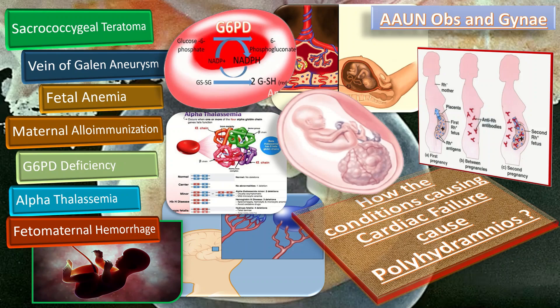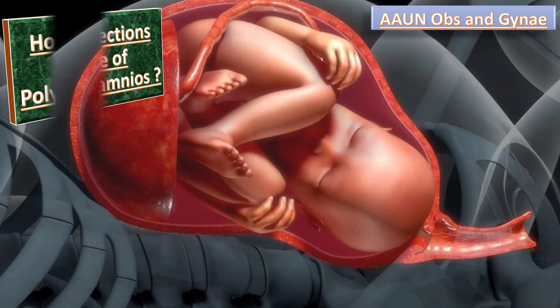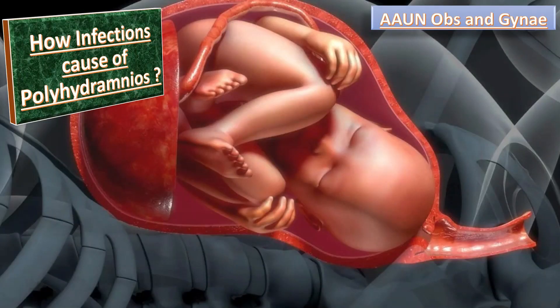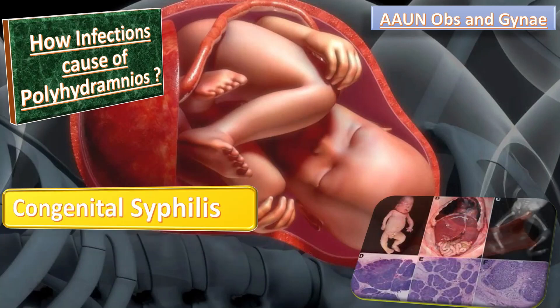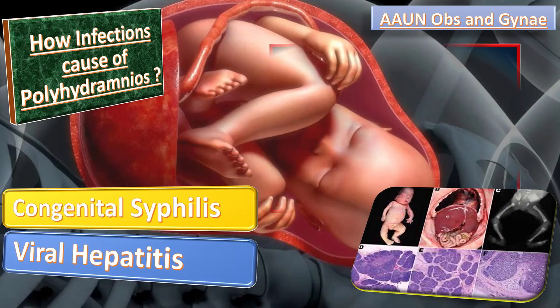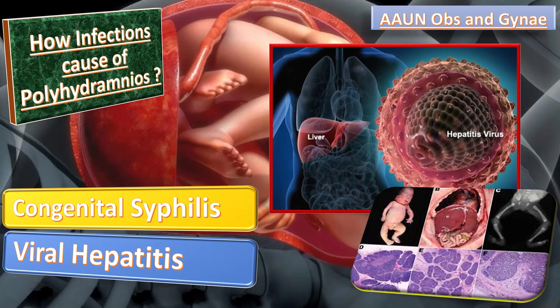How do different infections cause polyhydramnios? The infections causing polyhydramnios include congenital syphilis and viral hepatitis. There are several theories, but the proposed model involves increased production of amniotic fluid via a mechanism similar to that of Lissencephaly-Magalli, which increases the production of amniotic fluid.